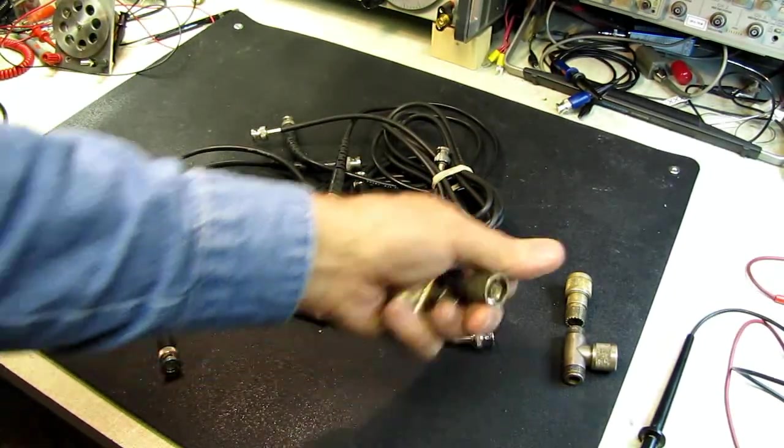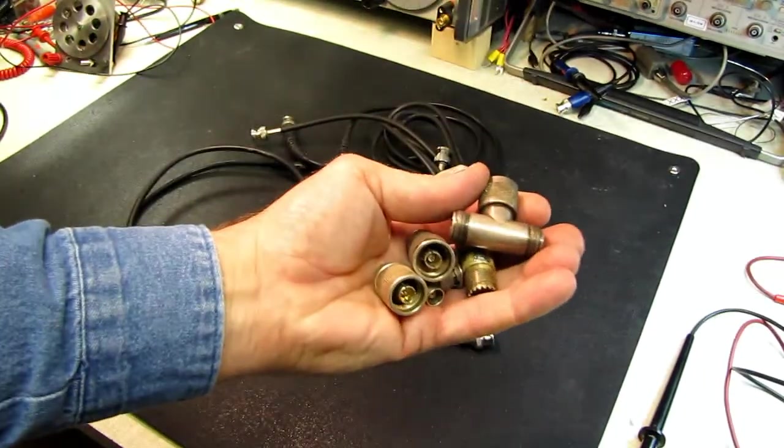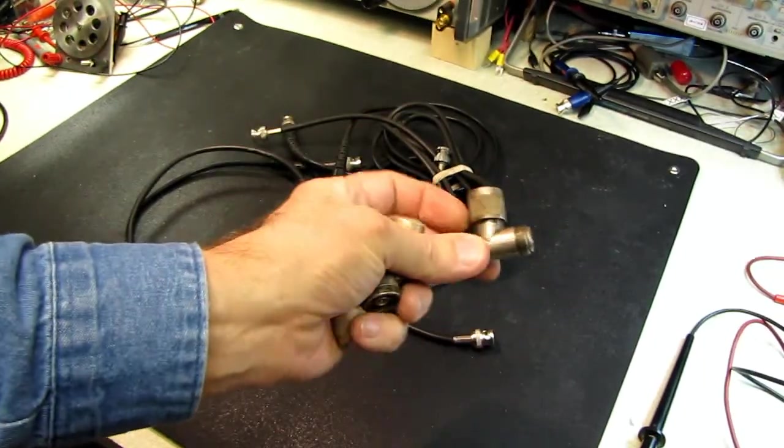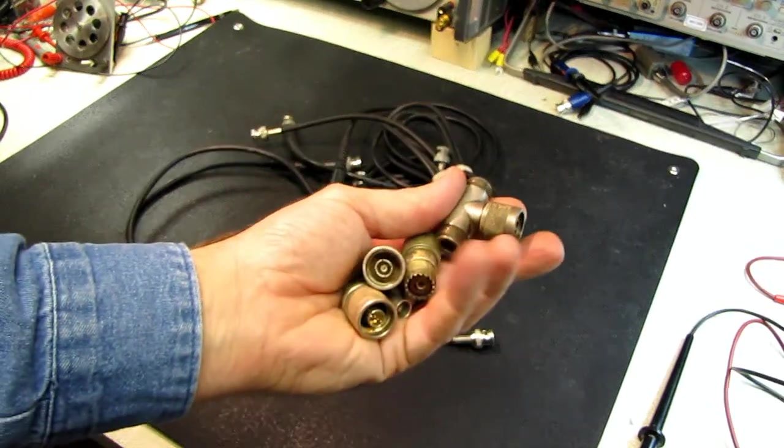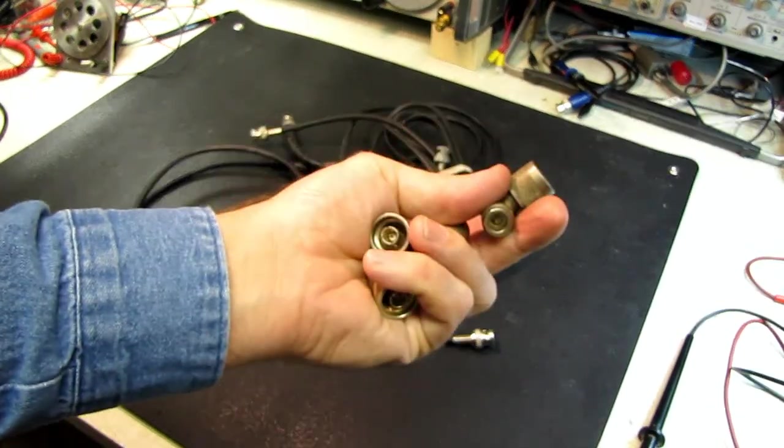Just because the silver plating is tarnished doesn't hurt them in the least. These things can be $10-15 a piece, so if I see them for 50 cents or a buck and they're in good shape, I grab them.